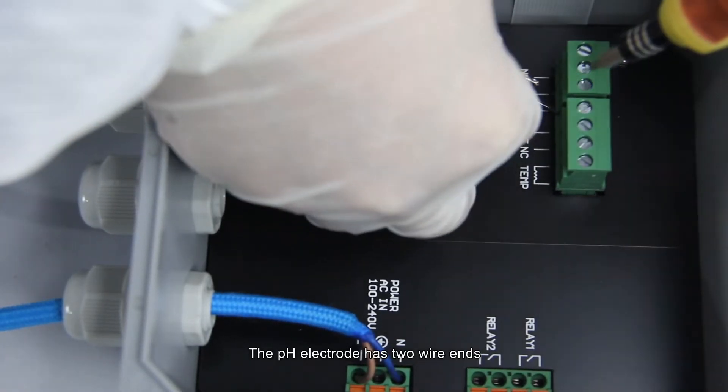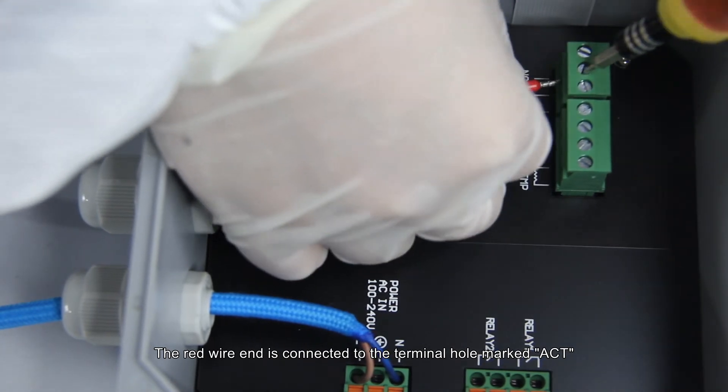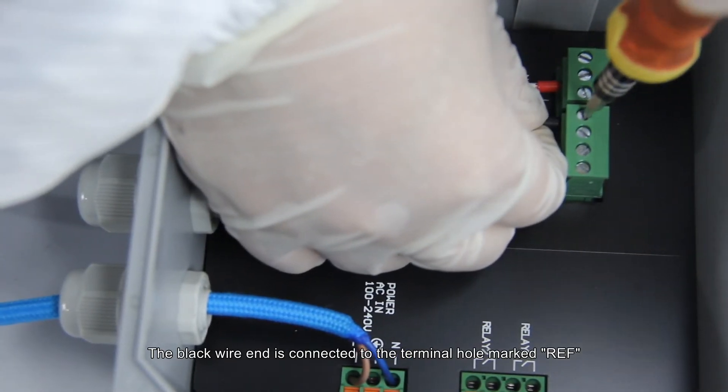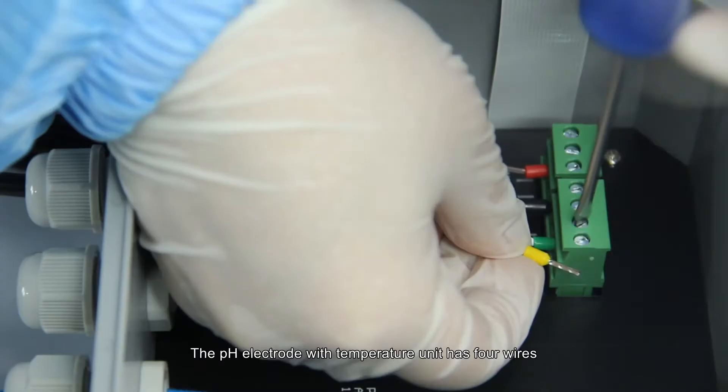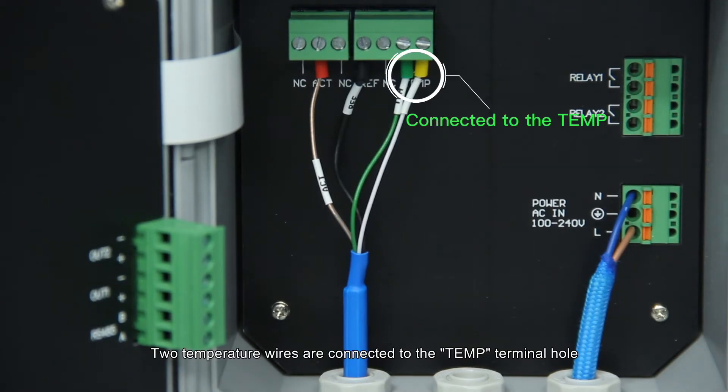The pH electrode has two wire ends. The red wire end is connected to the terminal hole marked T. The black wire end is connected to the terminal hole marked REF. The pH electrode with temperature unit has four wires. Two temperature wires are connected to the temp terminal hole.